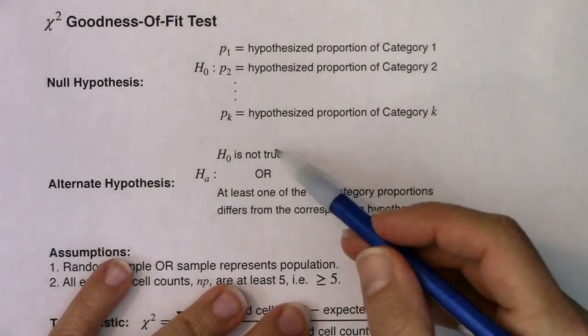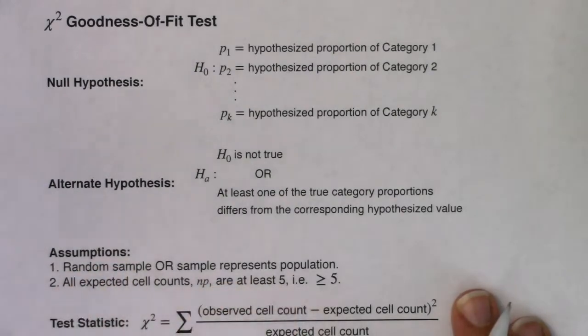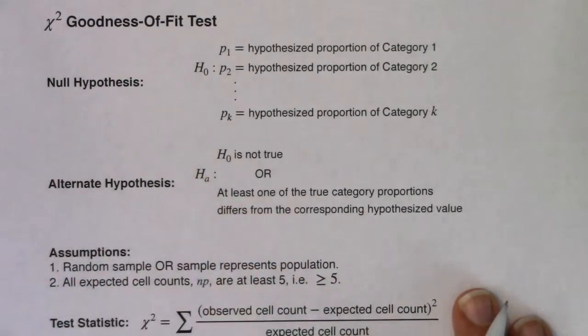It's probably simplest to write that the null is not true — whatever you're claiming, something's off. We won't be as specific as to say what is off; we'll just say something's off.